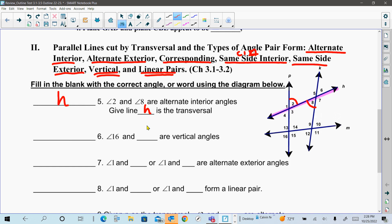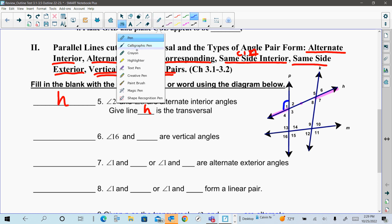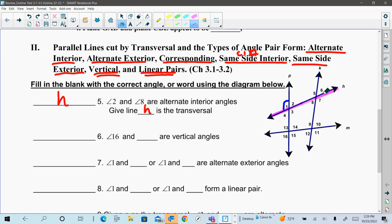On number 7, they want us to focus on angle 1, and they want them to be alternate exterior. Angle 1 here is using that same transversal H. So for it to be alternate exterior, I have to be on opposite sides, outside the other two lines. The other two lines would be P and K. So the answer here is that you could have an alternate exterior with H as a transversal with angle 7.